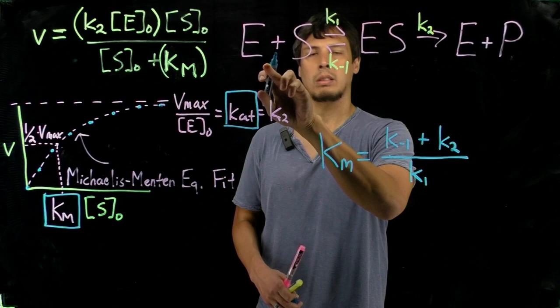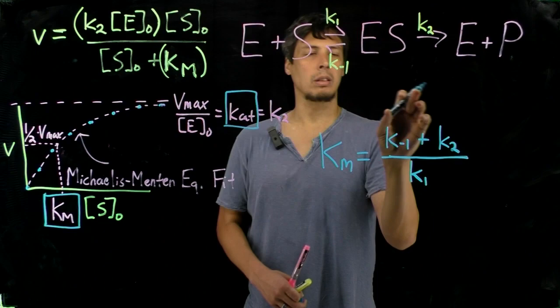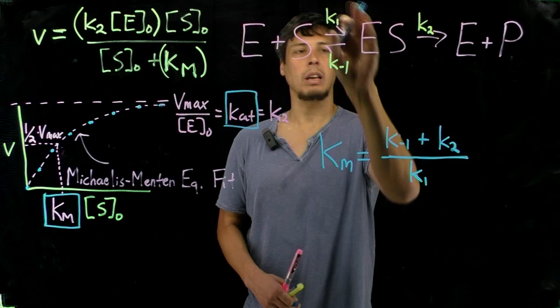K2 consumes ES and converts it to enzyme plus product. The denominator has the sum of the rate constants that form ES, the ES complex. And so there's only one, and that's K1 here.